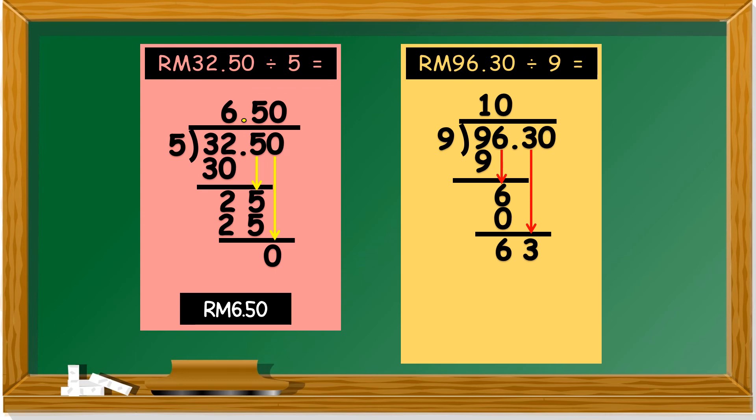You remember how to find multiplication of 9 using the finger. Put both of your hands on the table with all your fingers spread. Open big all your fingers. So 63, you count from left. 6. 1, 2, 3, 4, 5, 6. You close the 7th finger. Then you get 63. So it's 7. So 9 times 7 is 63. Bring down the last number, 0. So it's 0 times 9 equals to 0. We get our answer which is RM10.70.